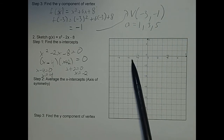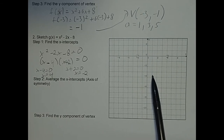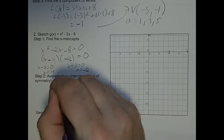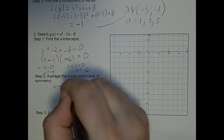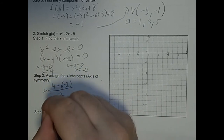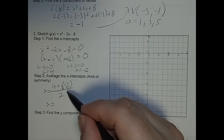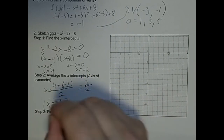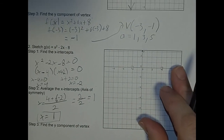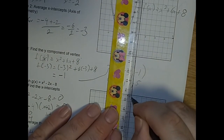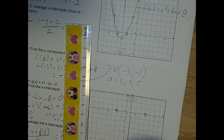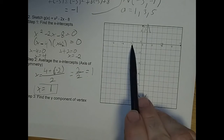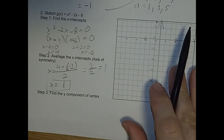The axis of symmetry is halfway between the two intercepts at x equals 4 and x equals negative 2. We average them: 4 plus negative 2 over 2 equals 2 over 2 equals 1. So our axis of symmetry is at x equals 1. That's the line that cuts this parabola in half. I'll draw that line at x equals 1 on the graph.